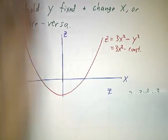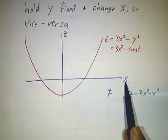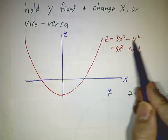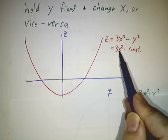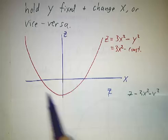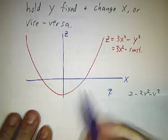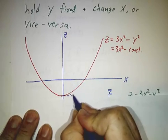If you keep y fixed, then you can plot z as a function of x for a fixed value of y. And then z is 3x squared minus y squared, so that's 3x squared minus a constant. It just looks like a parabola. It looks like the graph z equals 3x squared only pulled down by an amount. This amount is minus y squared.